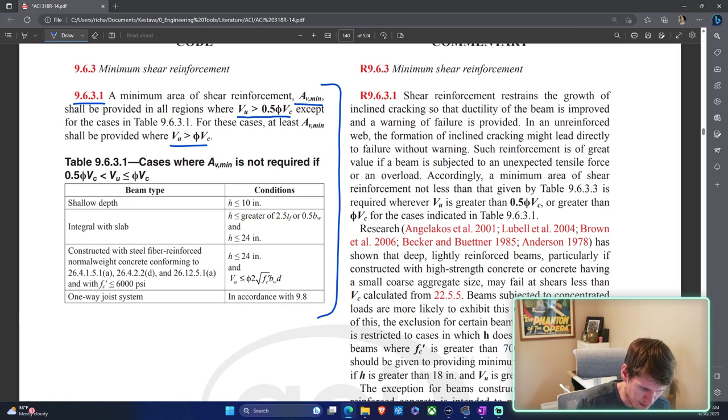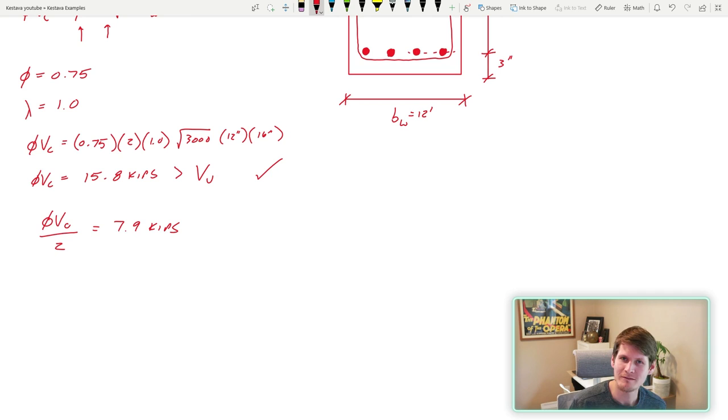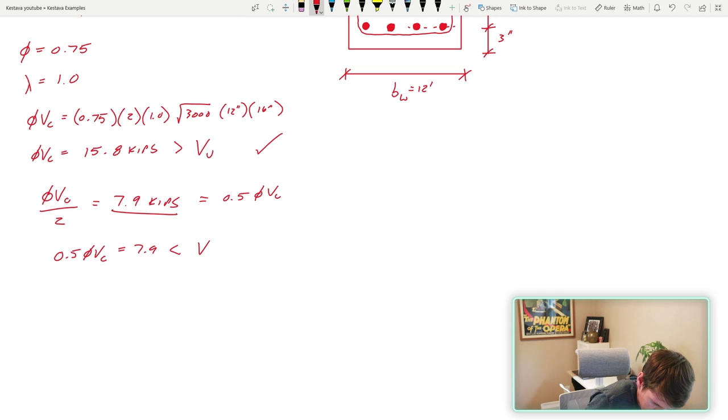So right there, minimum area of shear reinforcement, AV min shall be provided in all regions where VU is greater than phi VC over two, or they write it as 0.5 phi VC, except for the cases in this table below. There you have it. This really right here is what we're looking for. We have the strength of our concrete over two, 7.9 kips, which equals 0.5 phi VC. So it's less than VU equal to nine. So we need AV min.